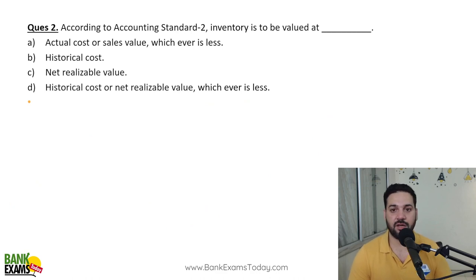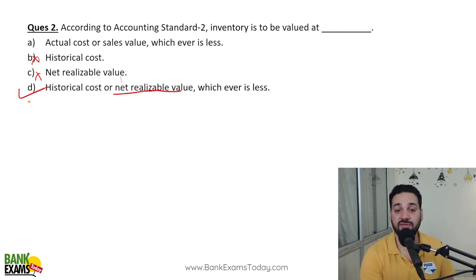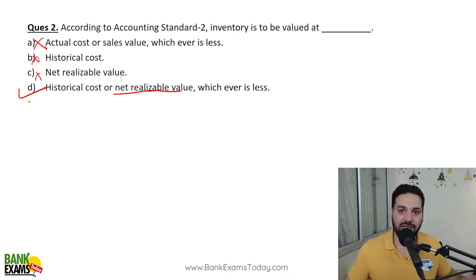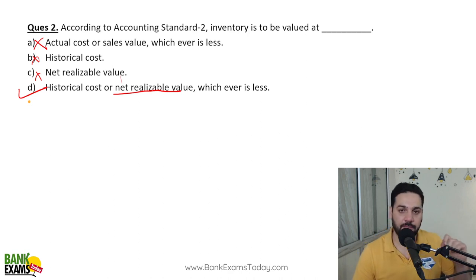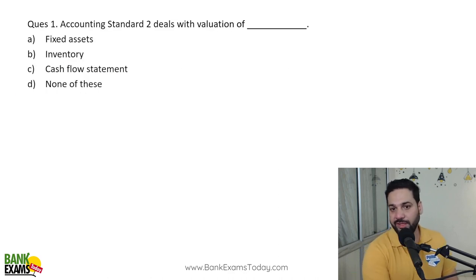A common exam question: according to AS-2, inventory is to be valued at historical cost or net realizable value, whichever is lower. Do not confuse this with sales value — the correct answer is NRV, which is sales price minus any expenses needed to complete the sale. AS-2 deals with valuation of inventory, and this is a frequently asked exam question.